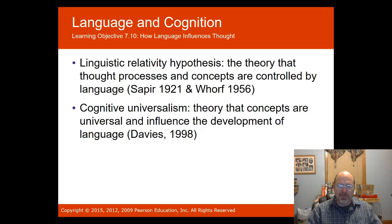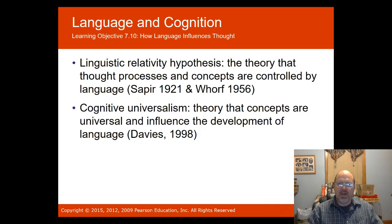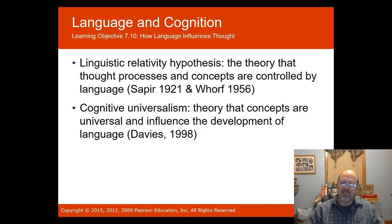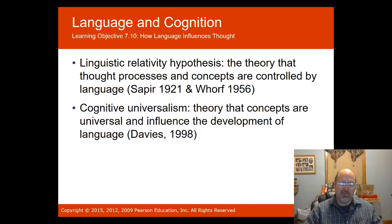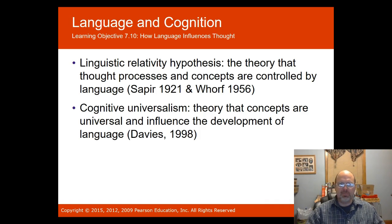Cognitive universalism is the opposite view — some people say it's our thoughts that can influence our language, not language that influences our thoughts. Davies had a different approach to language.